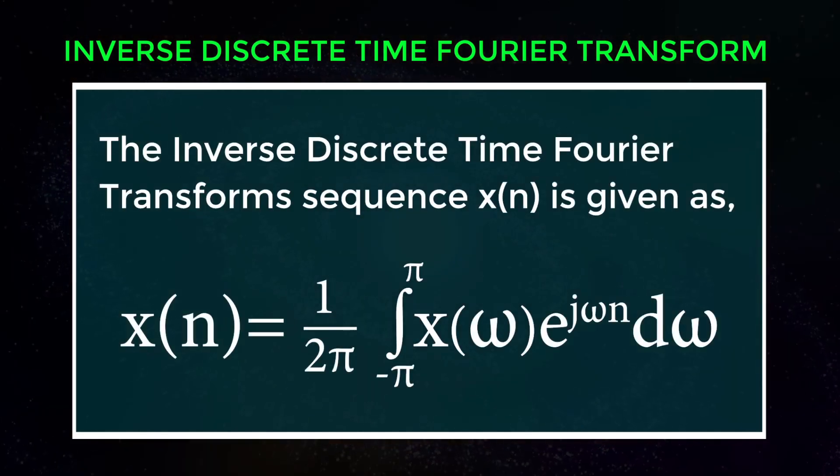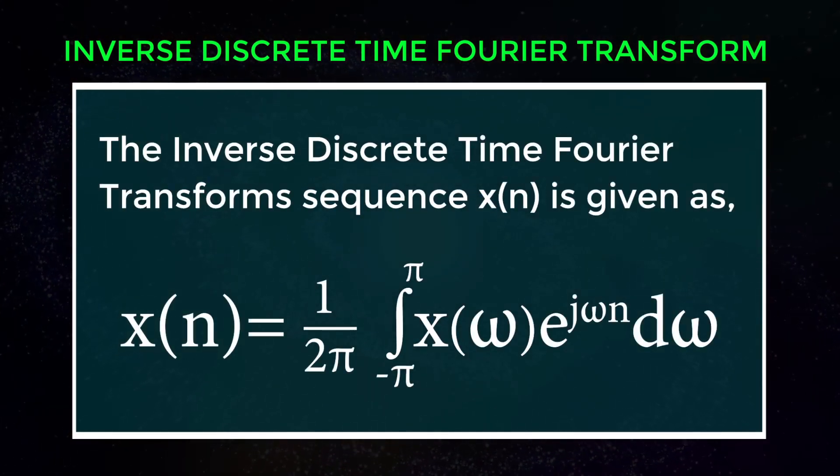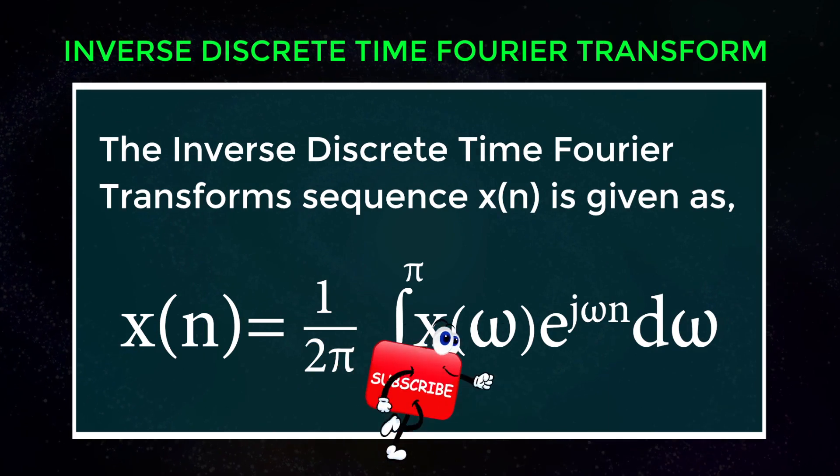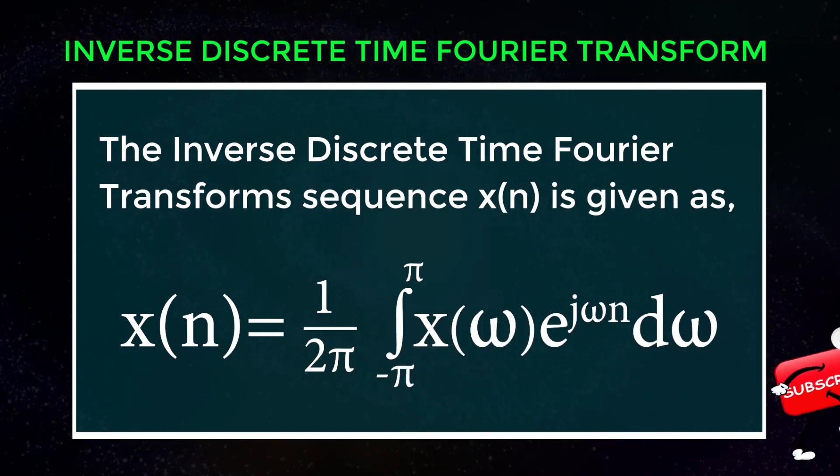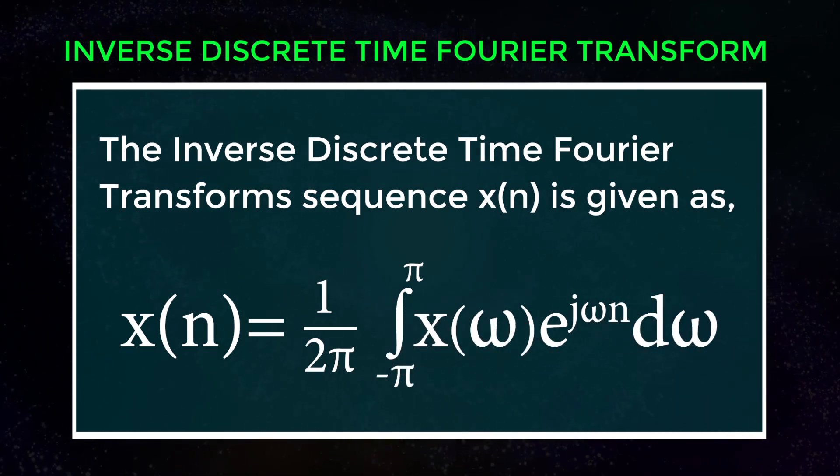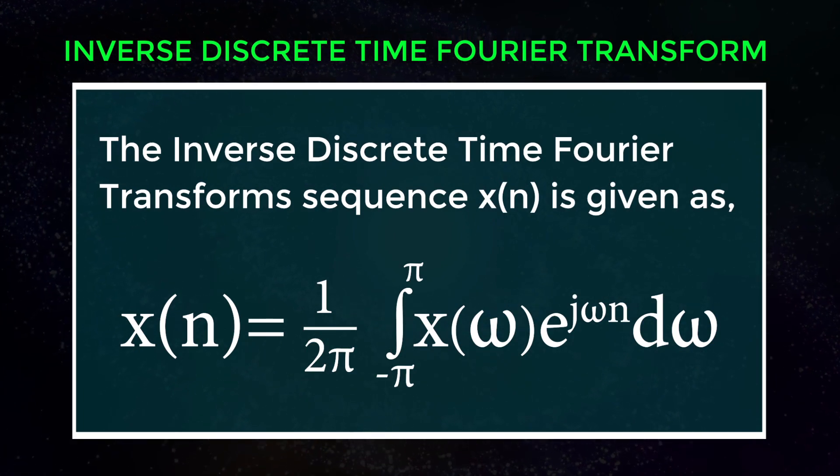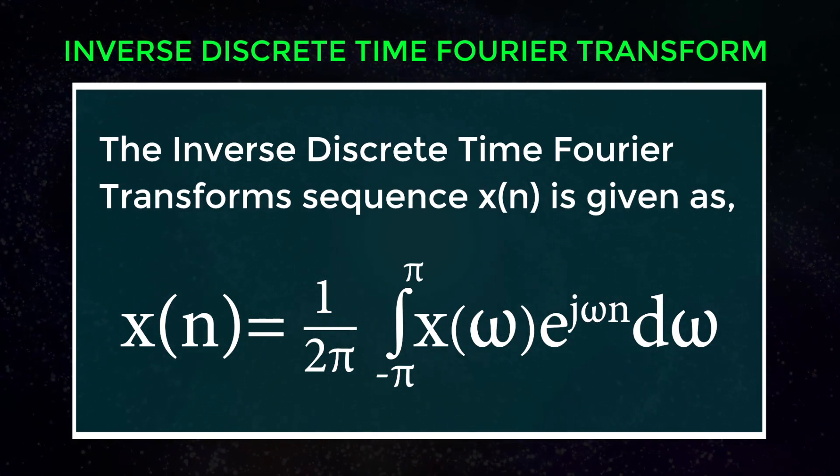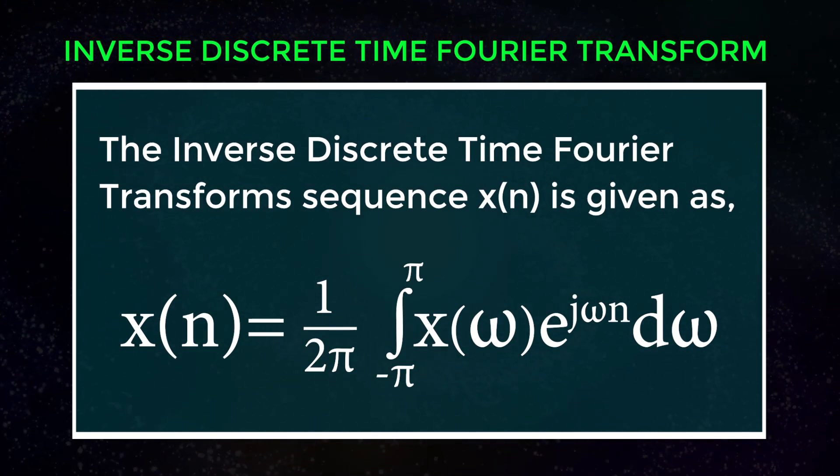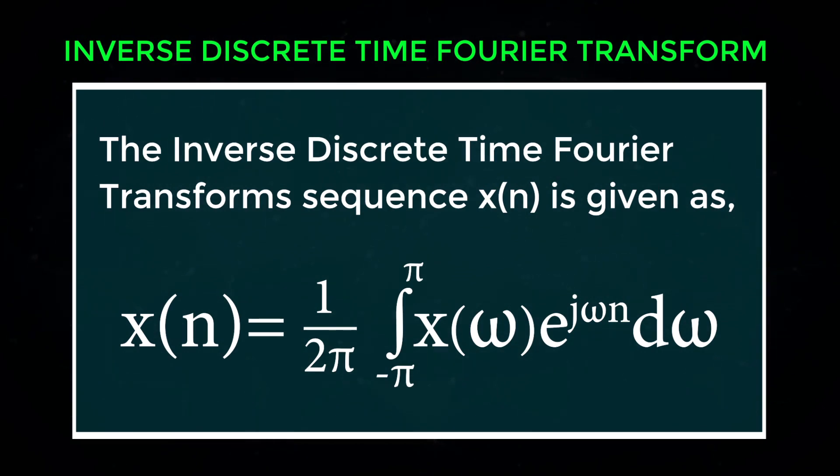The inverse discrete time Fourier transform sequence x(n) is given as x(n) equals 1 by 2π times the integral from minus π to π of X(ω) times exponential of j times ω times n times dω.